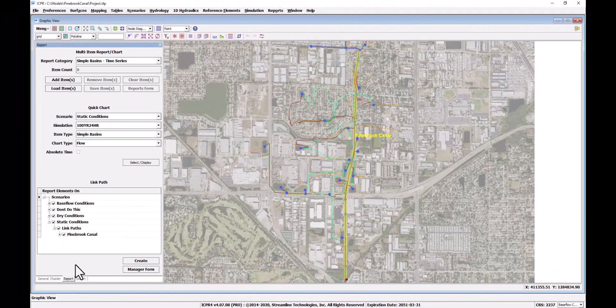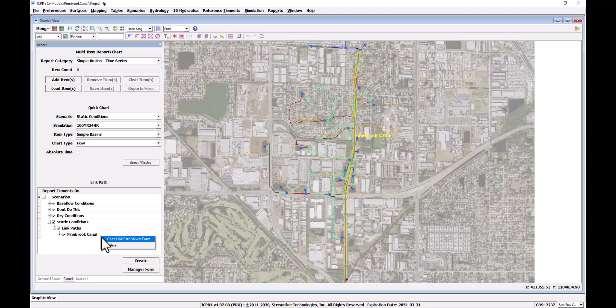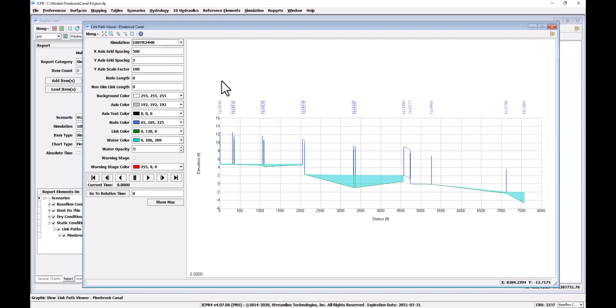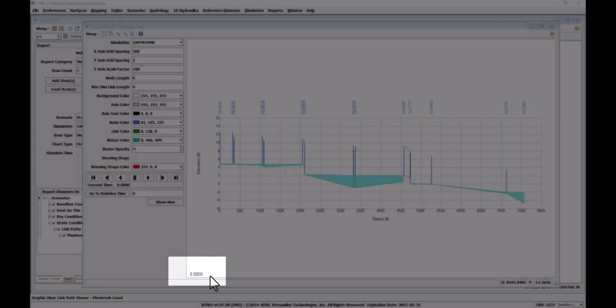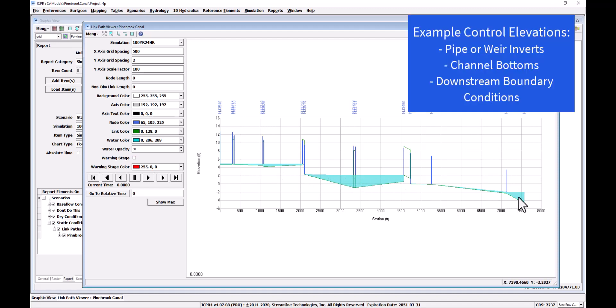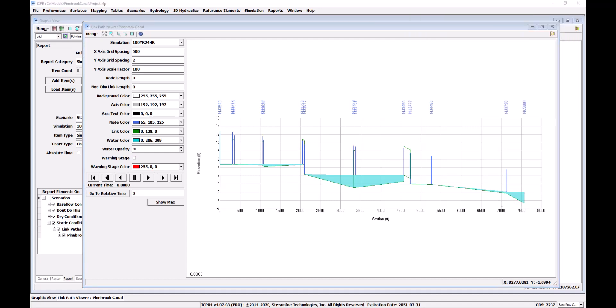The Link Path Profile tool will be used to illustrate the three methodologies for setting initial stages. Note that the time indicator here tells us that this is the start of the simulation. This flood profile shows a static condition methodology. With this method, initial stages are set at control elevations that hold water back. Storage below the control elevations is assumed to have been filled during previous rainfall events.